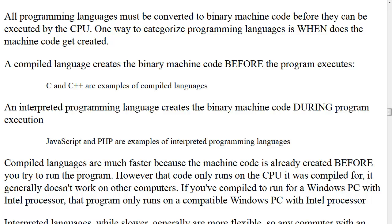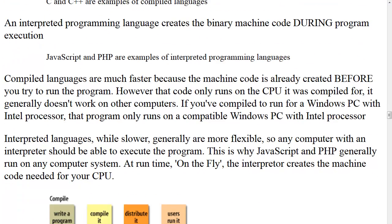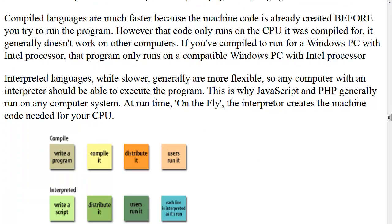A compiled language creates the binary machine code before the program executes. C and C++ are examples of compiled languages. An interpreted programming language creates the binary machine code during program execution. JavaScript and PHP are examples of interpreted languages. Compiled languages are much faster because the machine code is already created before you run the program. However, that code only runs on the CPU it was compiled for — it generally doesn't work on other computers. Interpreted languages, while slower, are generally more flexible, so any computer with an interpreter can execute the program.